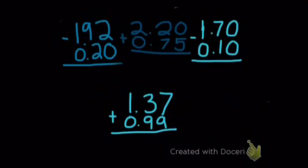Okay, so today we're going to learn how to add and subtract decimals. First we're going to do 1 and 92 hundredths minus 0 and 20 hundredths.